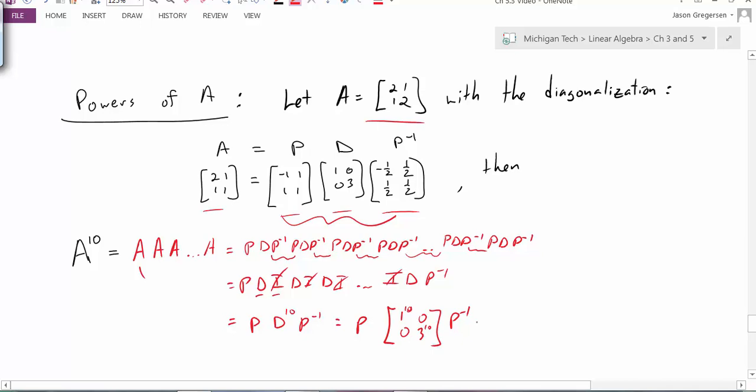But, this is one of the advantages because now, to calculate this, where I would have had to calculate 10 matrix multiplications, now I can just do 3 matrix multiplications. That really is a big cost saving or a computing time savings.